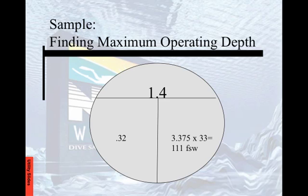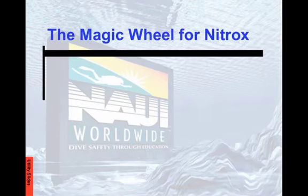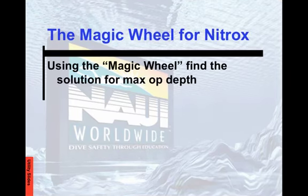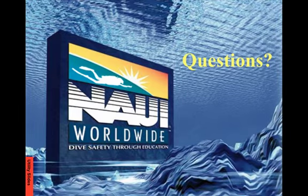That gives us 111 feet of salt water. If we want to find this for fresh water, we'd simply multiply by 34 instead. So again, that's the magic wheel for Nitrox — you should now be able to use the magic wheel to find a solution for your maximum operating depth. What questions do you have?